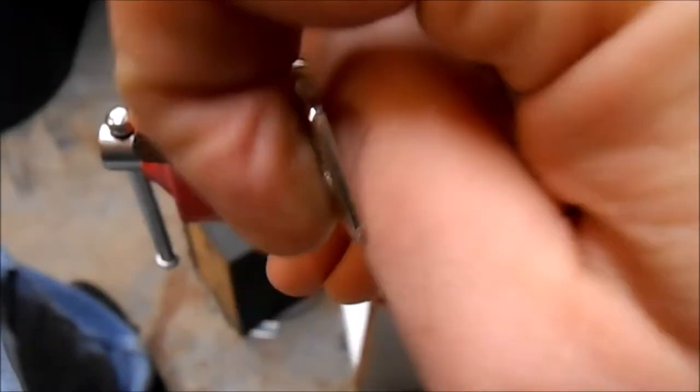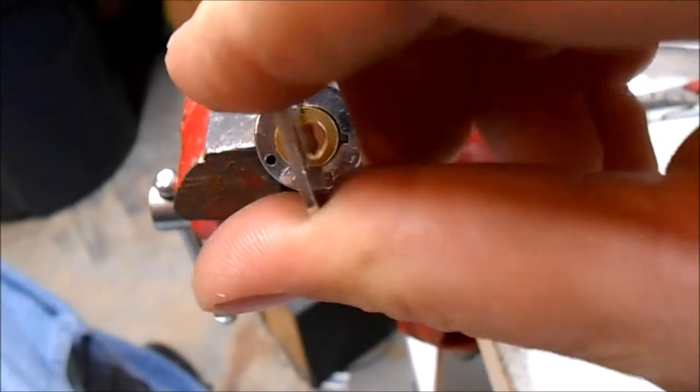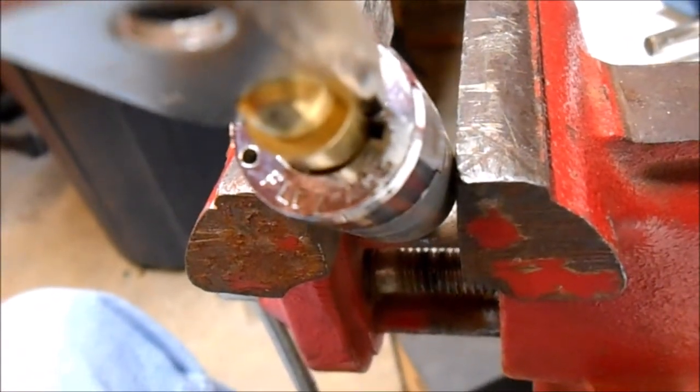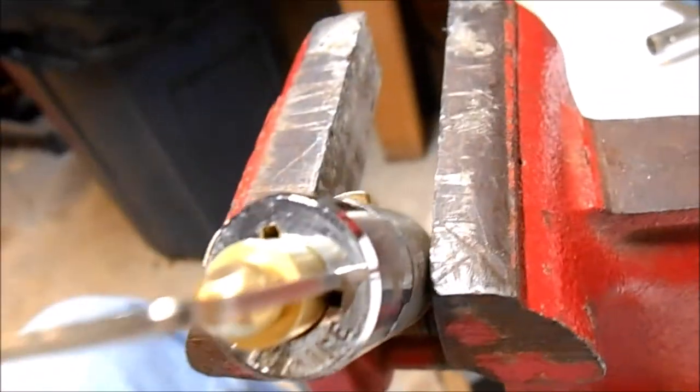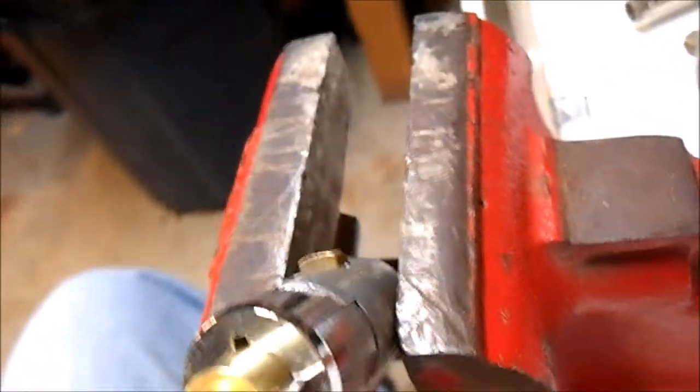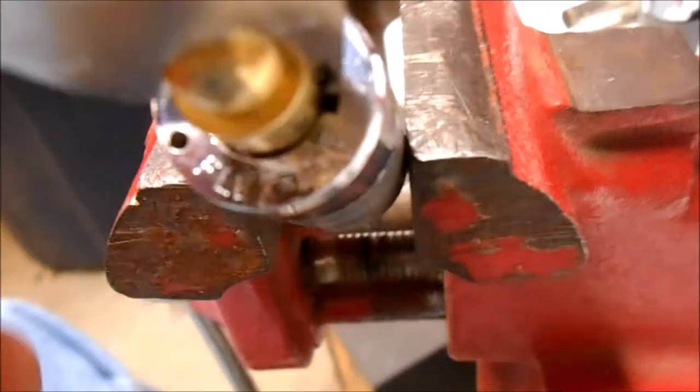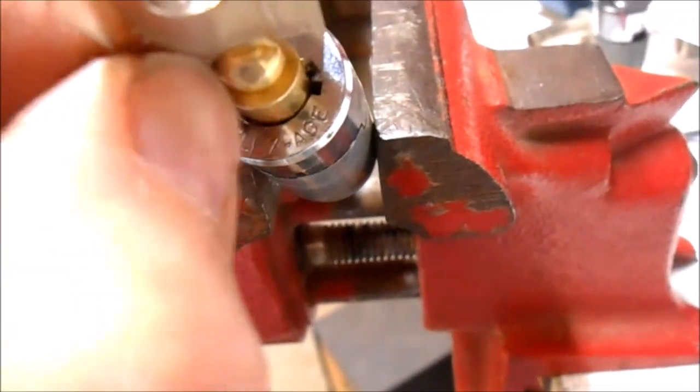Put that in there and you'll see that it'll turn but it won't turn far enough to make it to that notch so you can take the key out. In order to get the top off, what I've done is this little piece of 18 gauge wire. Stick it into the hole.